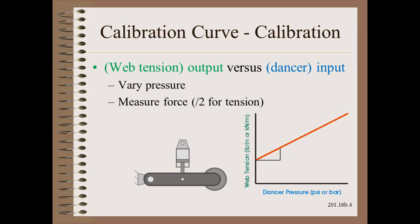We just vary the dancer cylinder pressure and then measure the force with a suitably sized force gauge or scale oriented in the web tension direction.